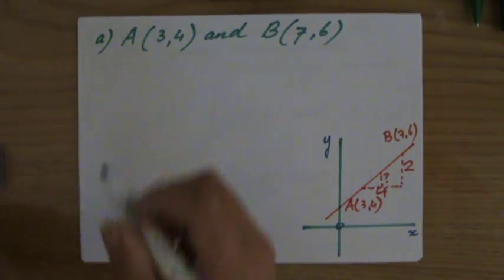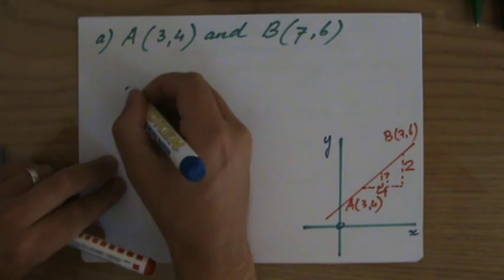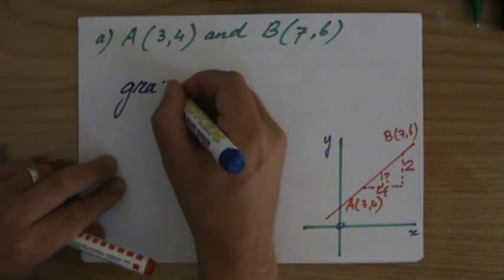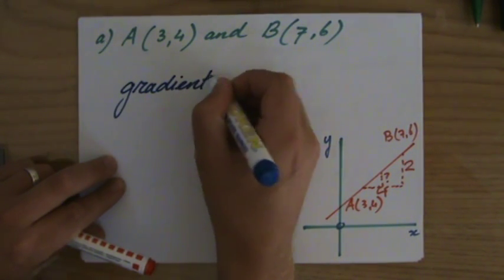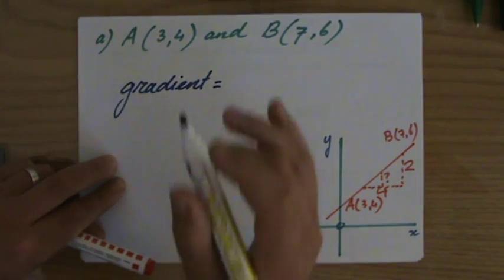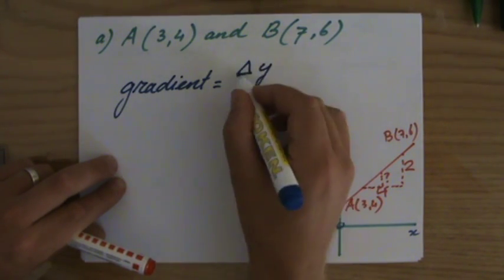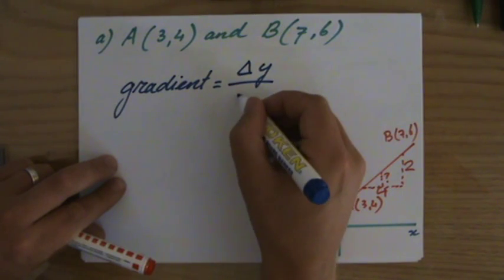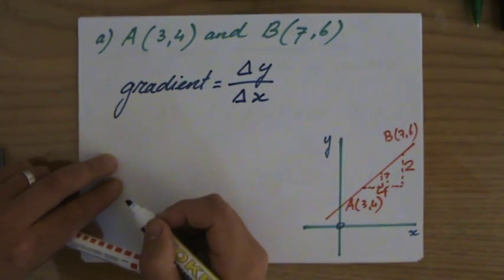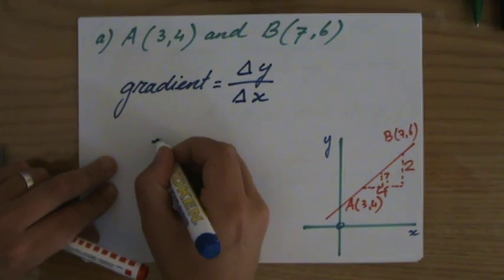Okay, that's the situation, but how do we calculate it? What I've shown you in previous videos is that if you have to calculate the gradient, you find the difference in the y direction, delta y, divided by the difference in the x direction.